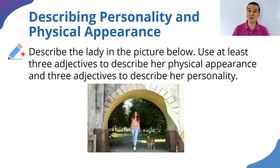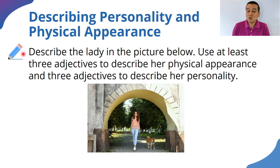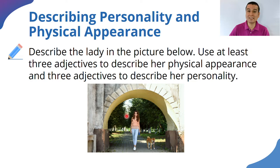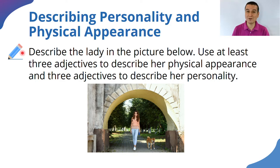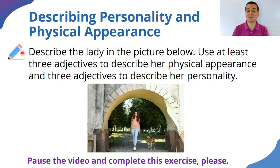Now this is the main activity for this lesson: describe the lady in the picture. What would you say about that lady? Use at least three adjectives to describe her physical appearance and three adjectives to describe her personality. You don't know her personality, but analyzing the picture you might get an idea. Write a short paragraph describing her. Pause the video, complete the activity, and I'll show you a sample answer in a moment.